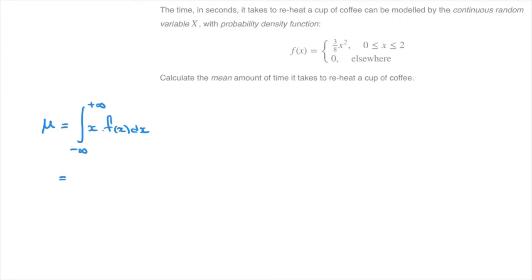It's equal to the definite integral from zero to two of x times three eighths of x squared. Multiplying these two x's together and taking the three eighths outside of the integral, we can write that this equals to three over eight times the definite integral from zero to two of x cubed.